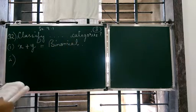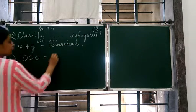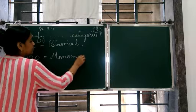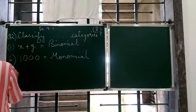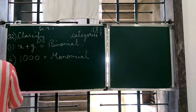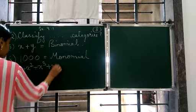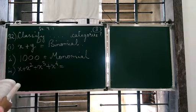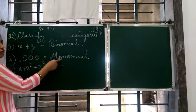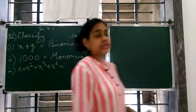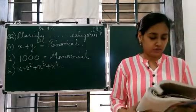Second one is 1000. How many terms? One term. So it is a monomial. Then third one is x plus x square plus x cube plus x to the power 4. So how many terms? One, two, three, four. So neither binomial or monomial or even trinomial. So what is it? It's a polynomial that do not fit in the three categories.